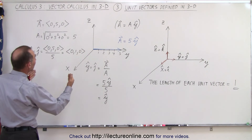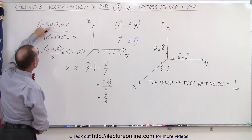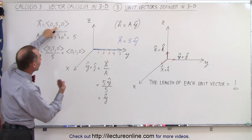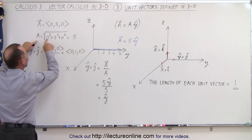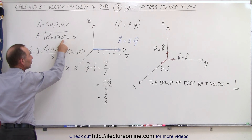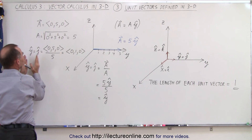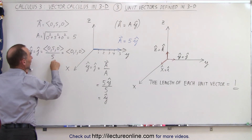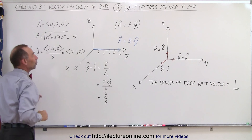Here we have another way in which we can represent the unit vector. If we have a vector A defined as (0, 5, 0) — 0 units in the x and z-direction but 5 units long in the y-direction — then we find the magnitude of that vector, which is equal to the square root of the sum of the squares of the individual components. In this case that equals 5. If we then want to find the unit vector in the y-direction, we take the vector, divide it by its magnitude, and we get the unit vector in the y-direction.